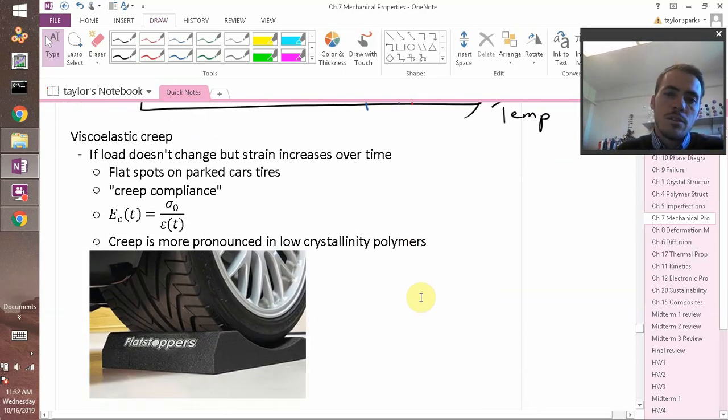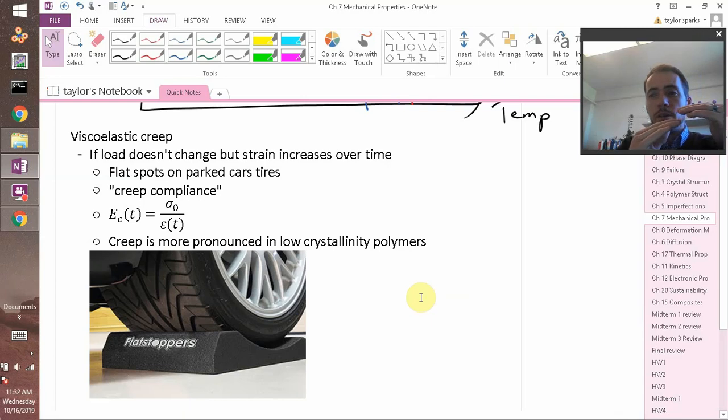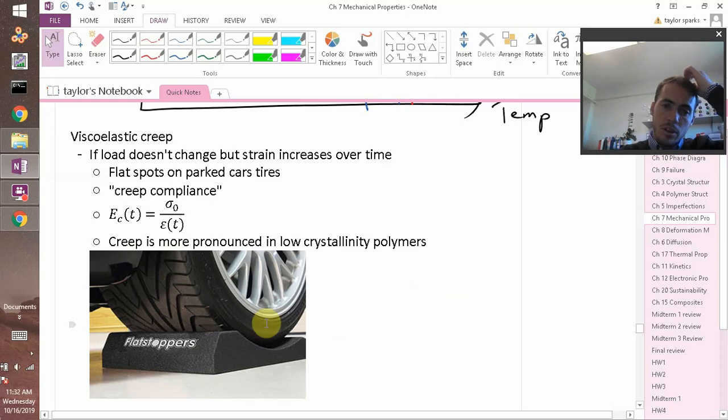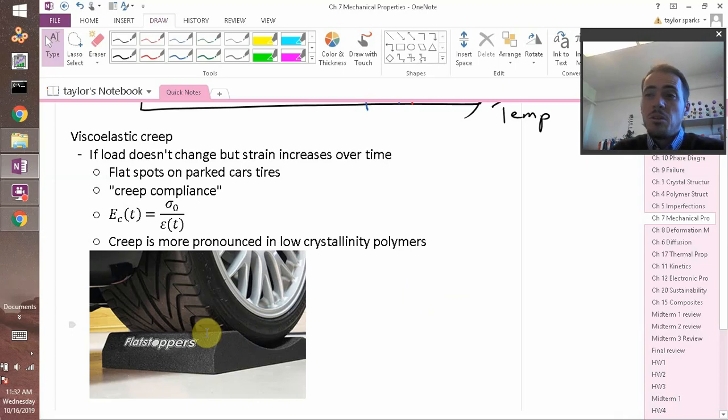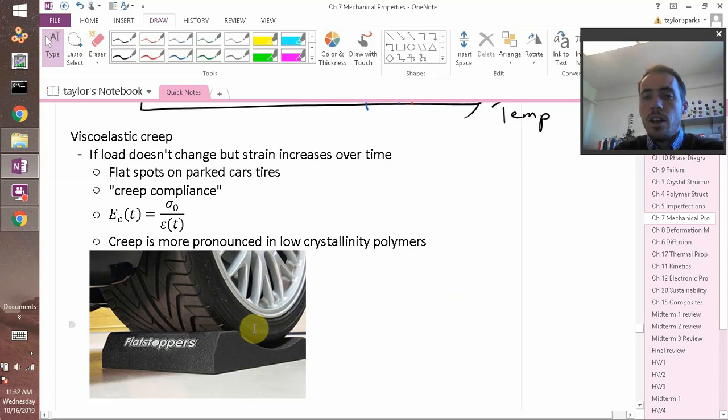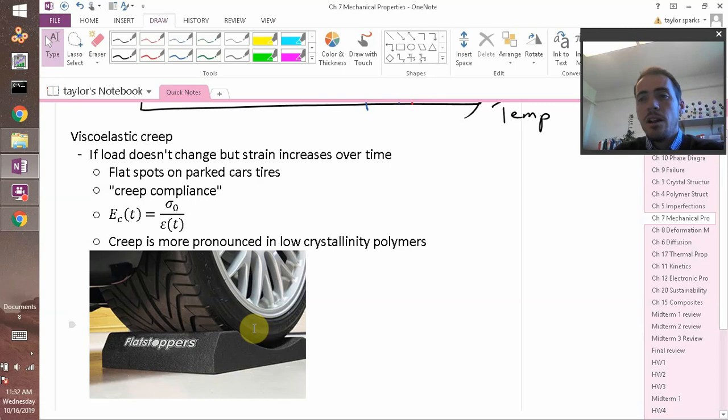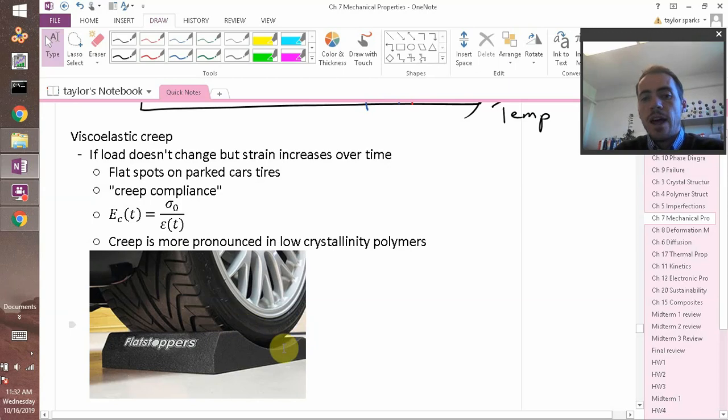Viscoelastic creep is important to consider because if polymer chains can sort of slide past each other over long time scales, this can lead to problems. Maybe you've noticed an old camper. Campers have these on tires. They'll have flat spots because that camper is parked in a spot for a long time. Maybe you only go camping a couple times a year with your camper. That means your tire is sitting there with all the stresses on that tire. And even though it's cross-linked and you don't expect it to flow, it's going to flow a little bit. So they have flat stoppers to prevent flats from forming in your tires because it helps prevent that strain by mitigating the stresses.